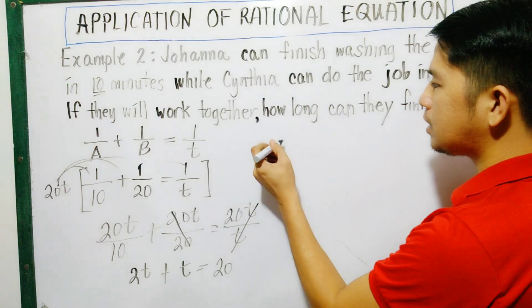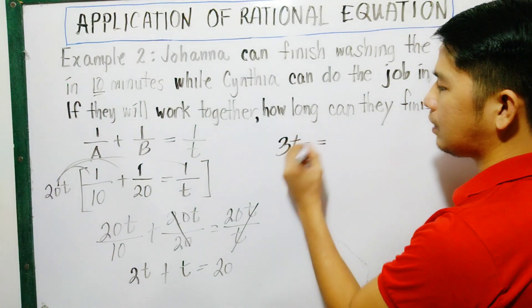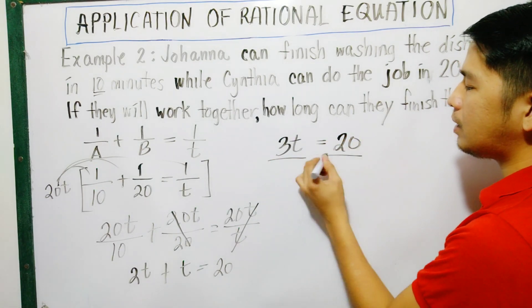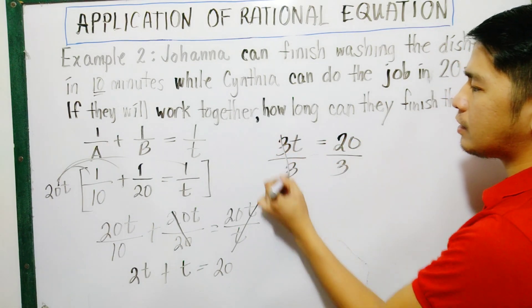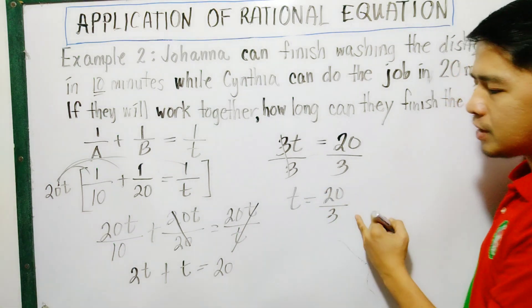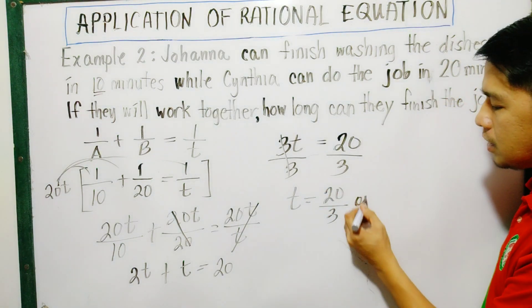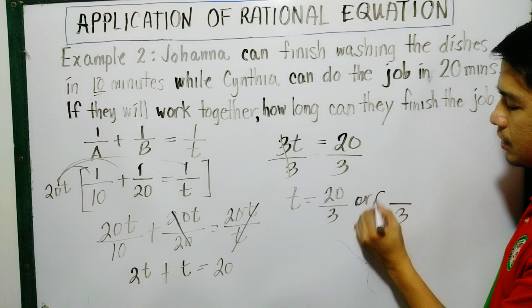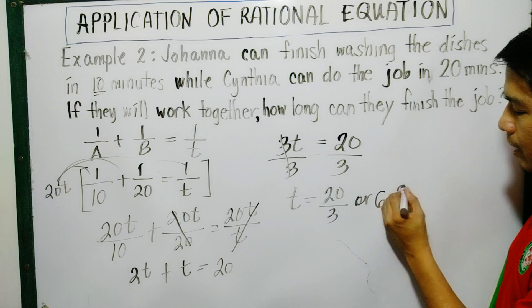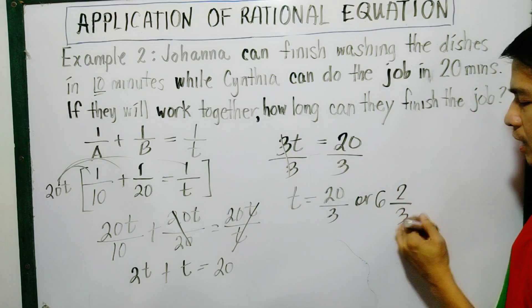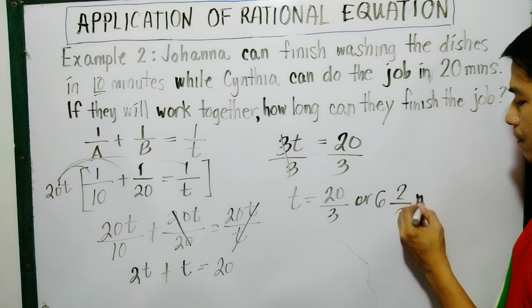So 2T plus T, that is 3T equals 20. Divide by 3. So we can get that the value of T is 20 over 3. Transforming this into mixed fraction, this is 20 over 3. Divide 20 by 3, that is 6. 18, so there are 2 left over. Therefore, they can finish the job within 6 and 2 thirds minutes.